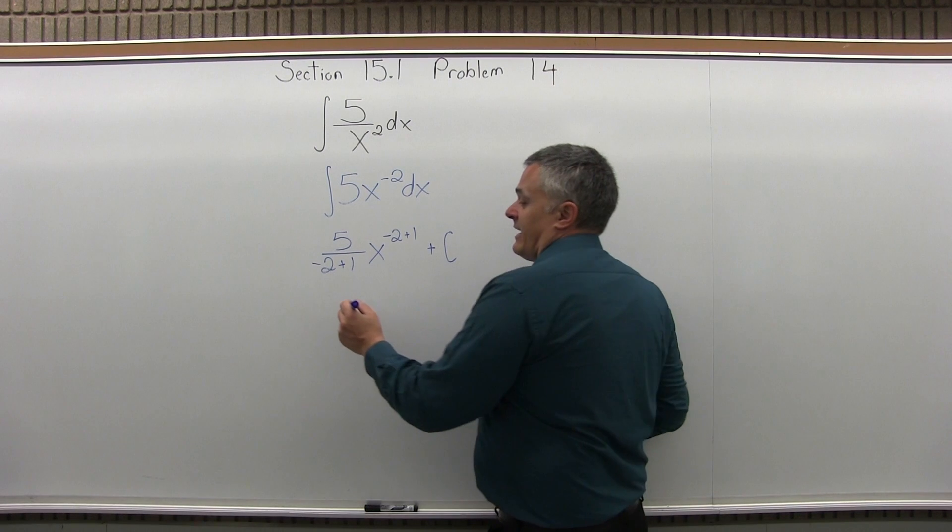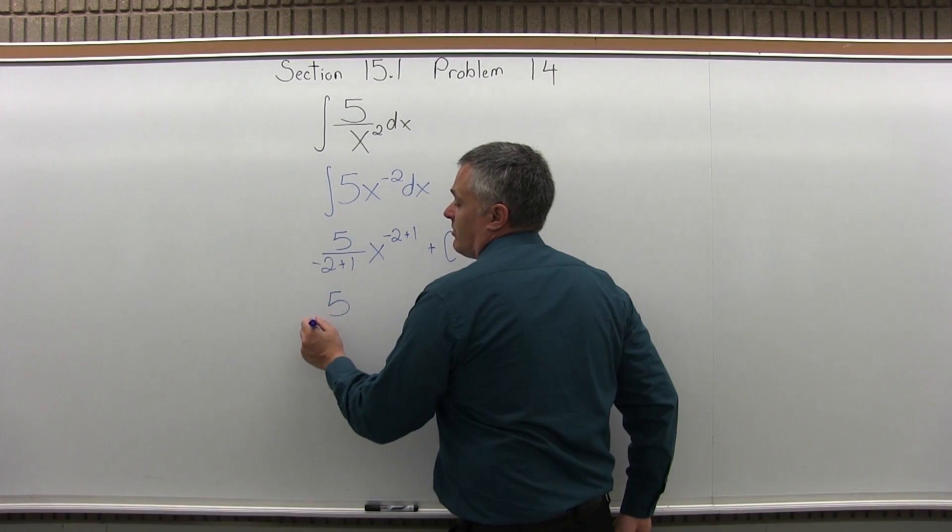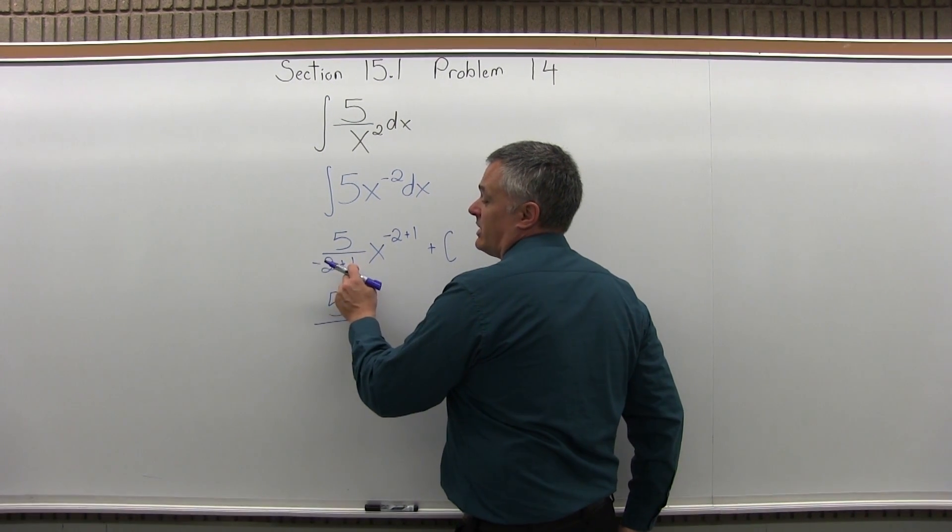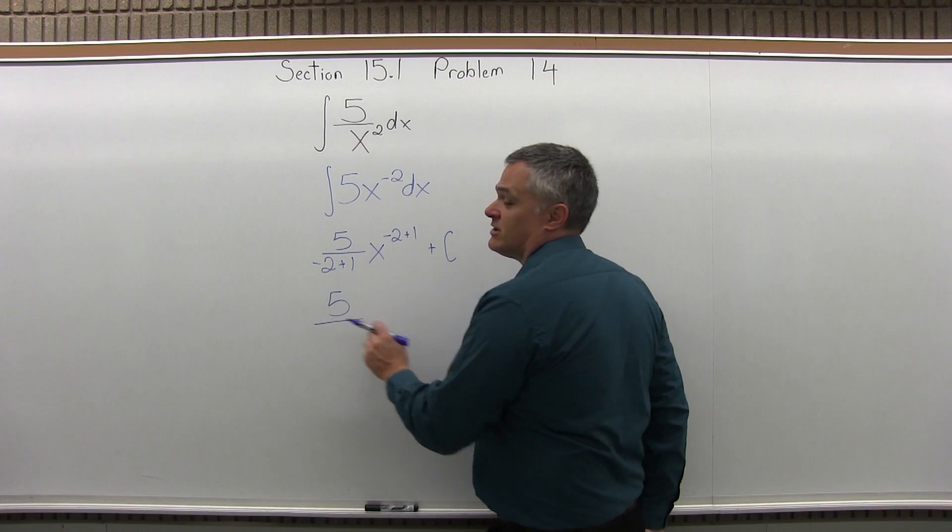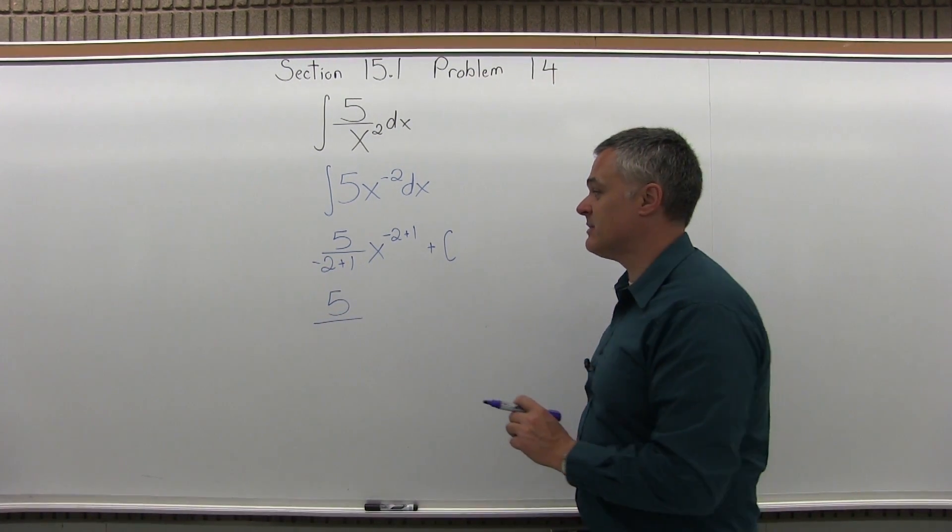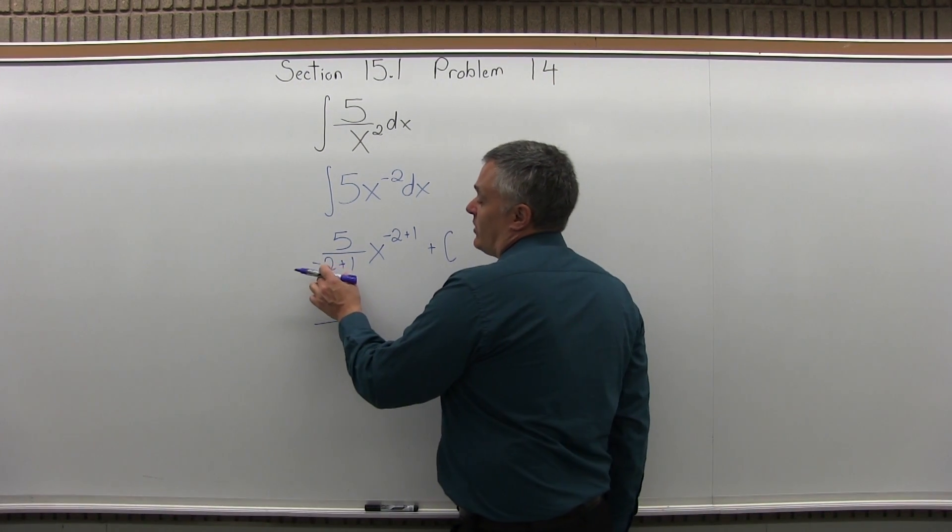And now, as I simplify that, see, in number 13, I ran into a problem. I had negative 1 plus 1 in problem 13, which put a 0 in the denominator, which is catastrophically bad math.